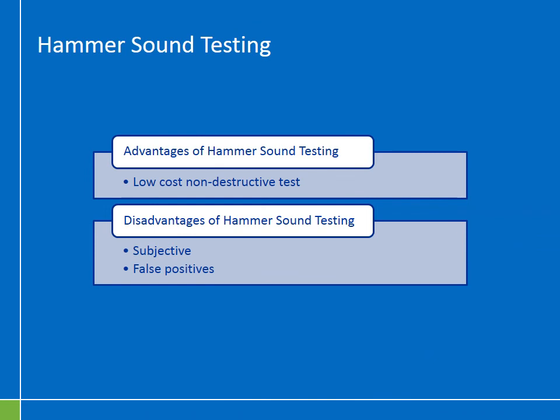Advantages: this is an incredibly low-cost, non-destructive test to learn about the structural integrity of a concrete culvert. Disadvantages: hammer sound testing relies on the interpretation of sound from the inspector, so you need to make sure the inspector has a good ear and is familiar with what sound concrete sounds like versus compromised or damaged concrete. It is also possible to get false positives depending on the acoustics within the culvert or the level of groundwater relative to the pipe — if the groundwater is high, you might hear different sounds as you strike the hammer against the concrete wall.